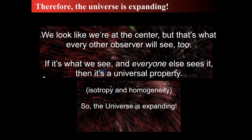The universe is expanding. We look like we're at the center, but that's what every other observer sees too — that's the cosmological principle. Since the laws of the universe are the same for everyone and our galaxy is no different from any other, we're not at the center of some grand explosion. Every other galaxy will see the same property. Therefore it's a universal property. The only way for everyone to see expansion is for the universe to be homogeneous and isotropic around the entire cosmos — the universe itself is expanding.